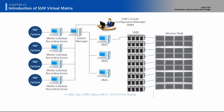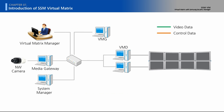Attach the license dongle key to the VMG computer, not the VMD. Network cameras transmit video data to the media gateway, and the media gateway transmits it to the VMD. Virtual Matrix Manager sends control data to VMG, and VMG controls VMD.